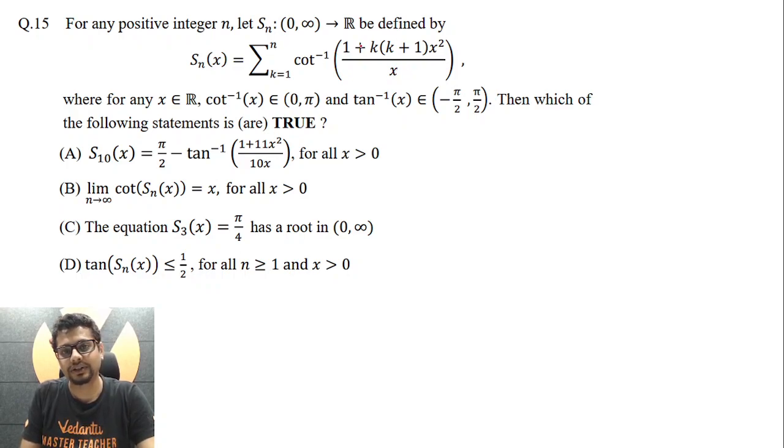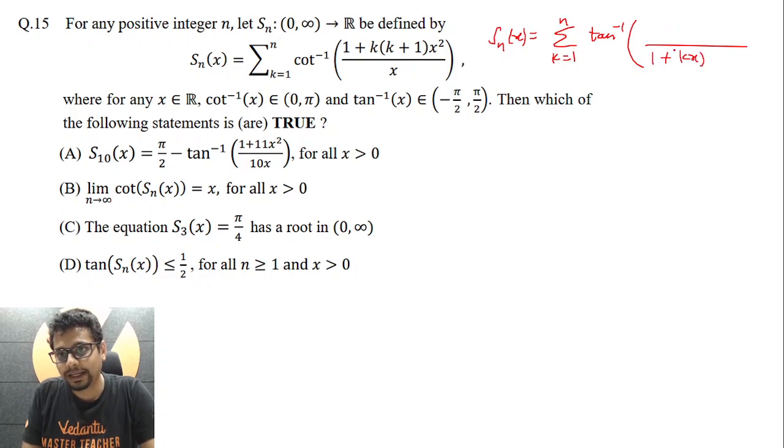So cot inverse of anything like this we can write as tan inverse of reciprocal of that thing, given that that thing is positive. So here this expression is positive. So S_n(x) we may write as sigma k equal to 1 to n tan inverse x by 1 plus kx multiplied by (k+1)x.